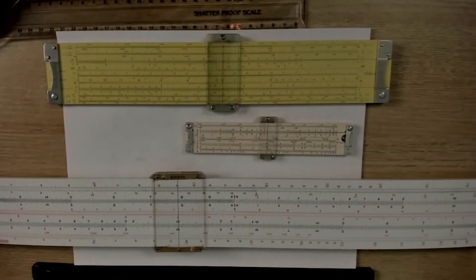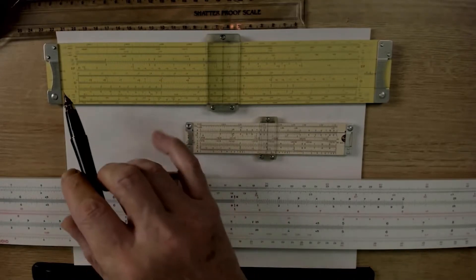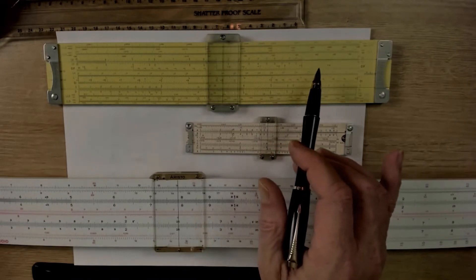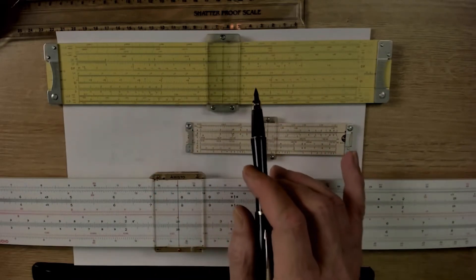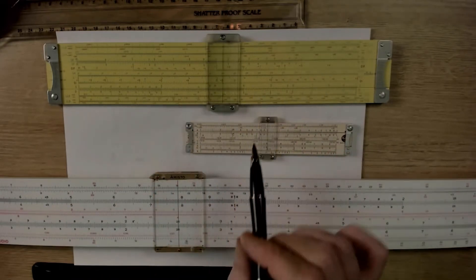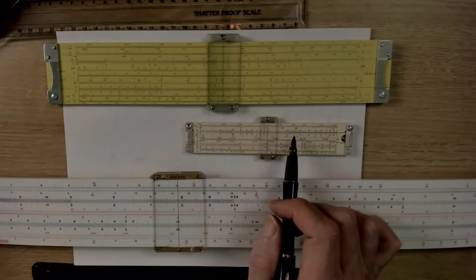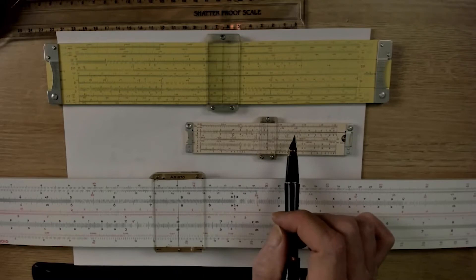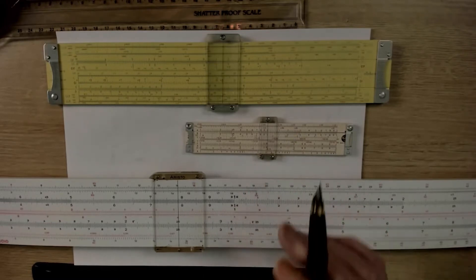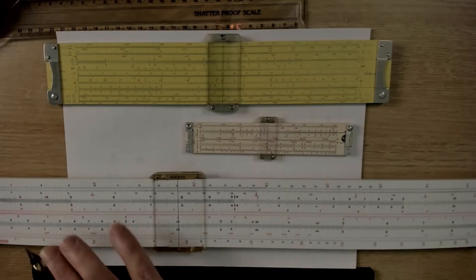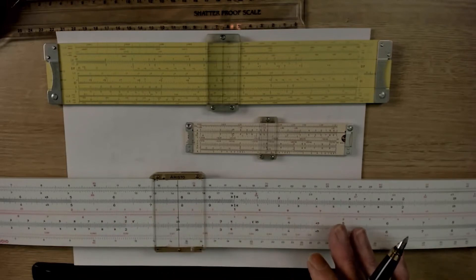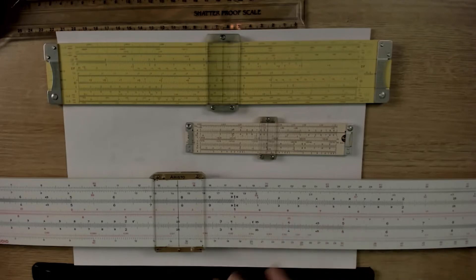Now, the accuracy of a slide rule is given in something called significant digits. A standard slide rule is 10 inches long, and it is good to about 3 significant digits. For quick calculations on the fly, we can use a pocket slide rule, and that's 5 to 6 inches long, and it's good to 2 to 3 significant digits. If you need a little bit more accuracy, you use a big 20-inch monster like this one. This is an Aristo Studio 1068, and it is good to 3 to 4 significant digits.